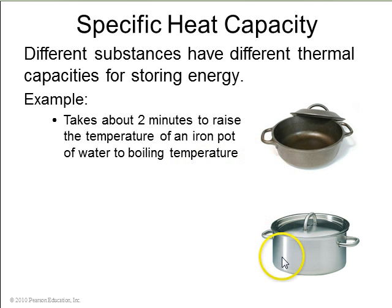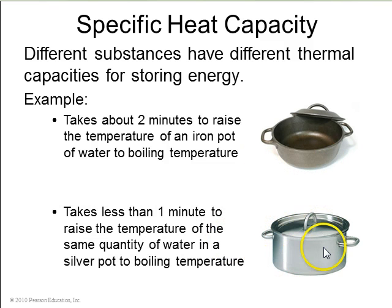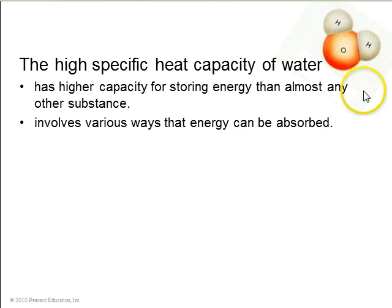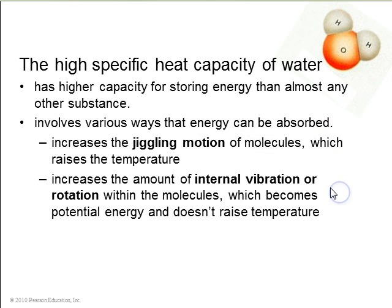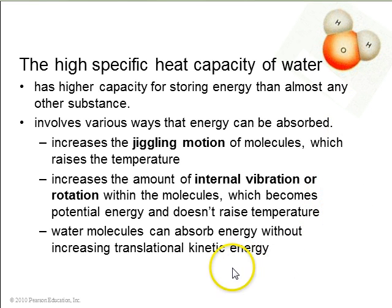For example, iron has a higher heat capacity than silver, so it takes about two minutes to raise the temperature of an iron pot to boil water, but if the same size pot were made of silver, it could take less than one minute. Water itself has a very high specific heat capacity — higher than almost any other substance — and it involves the number of ways the water molecule can absorb energy: jiggling of the molecules, internal vibration between the hydrogens and the oxygen, or rotation. This particular shape of the water molecule allows it to absorb energy without even increasing its translational kinetic energy.